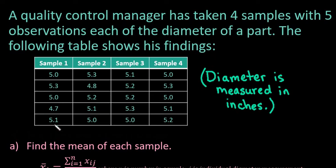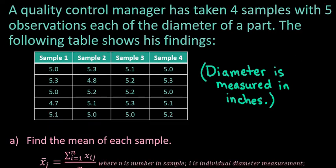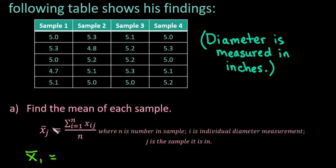Some of them have more variability than others, where some are a little bit closer together. When finding an estimate for the sample mean, you have to start with the mean of each individual sample. If you were doing this by hand, you would use the formula where you take the sum of each individual sample and divide it by the number in the sample — that's what the X_ij stands for. We're going to use the calculator to find each of our sample means.